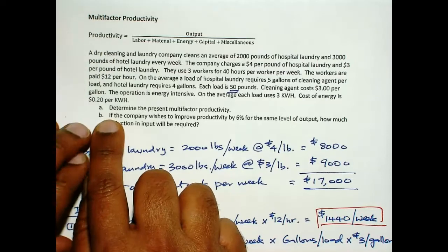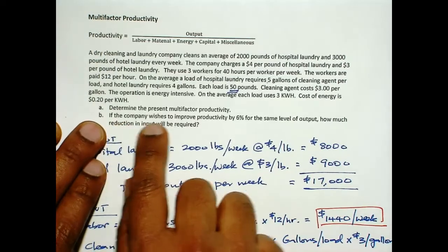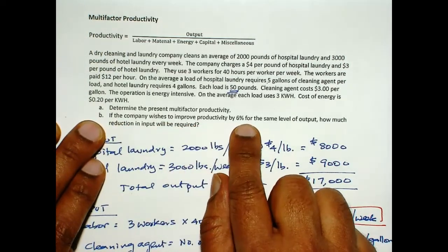Now in part B, what we want to do is, the company wishes to improve productivity by 6 percent.